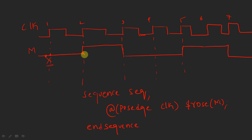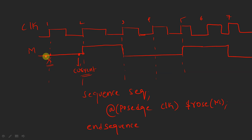At the second clock edge, the value at the current evaluation point is zero — we consider the value before the posedge. At the previous evaluation point the value was also zero. There is no transition from zero to one, so the `$rose` function returns zero and the assertion fails.